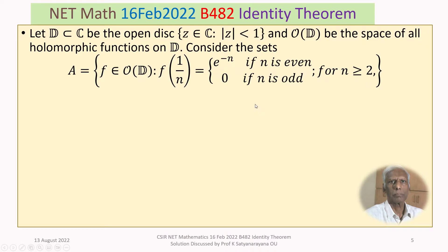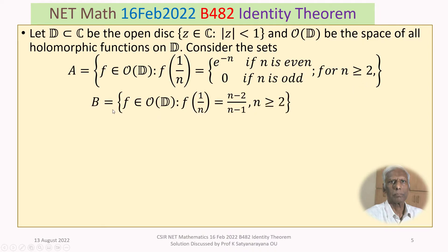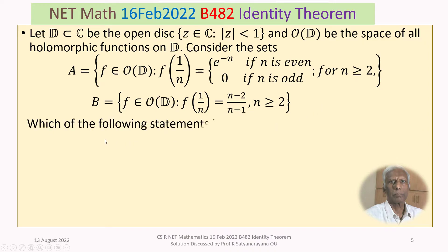Set B is defined as the set of functions F belonging to O of D such that F of 1/n equals (n minus 2) divided by (n minus 1), where n is greater than or equal to 2. Which of the following statements is true?